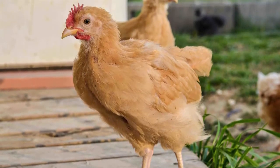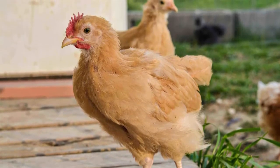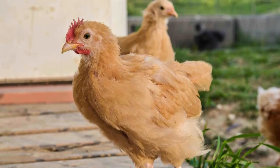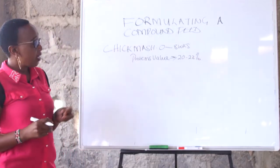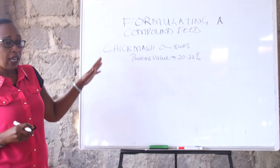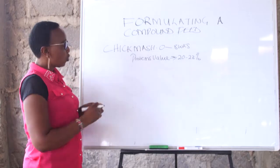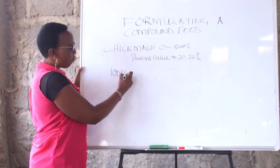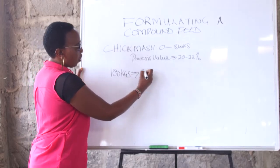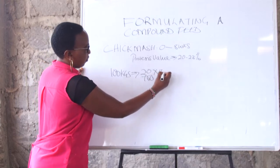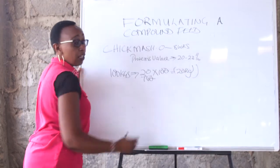You need to have protein values of about 20 to 23 percent. So we are saying that in 1000 kgs of the feed, 20% of that feed is protein. So if you are making 100 kgs of feed, 20% of the 100 — meaning 20 kgs of the components should be giving proteins.